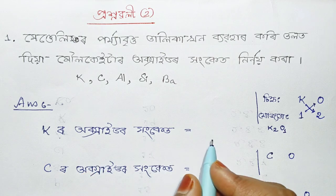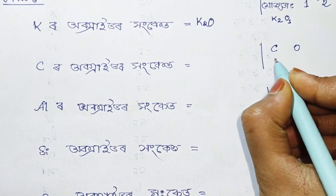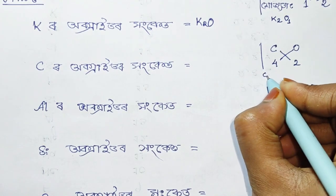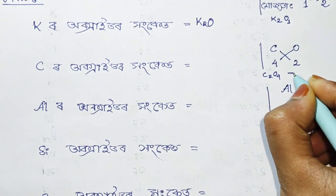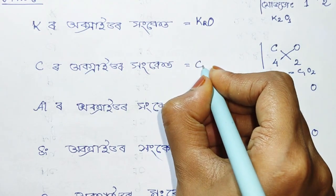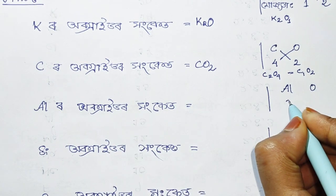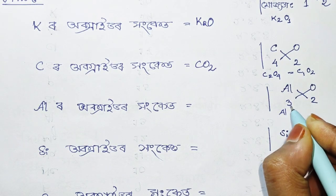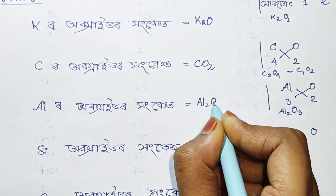Potassium oxide is K₂O. Carbon is 4 and oxygen is 2. We cross the same way to get C₂O₄, which simplifies to CO₂. Aluminium oxide: aluminium is 3 and oxygen is 2. We cross the same way — aluminium oxide is Al₂O₃.